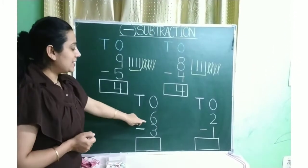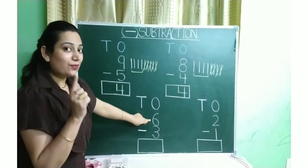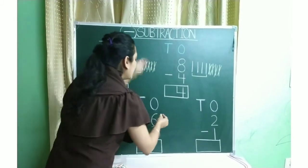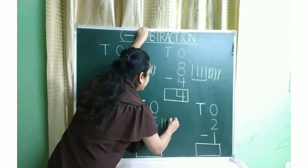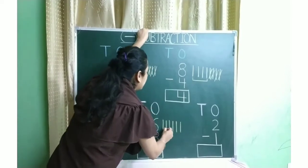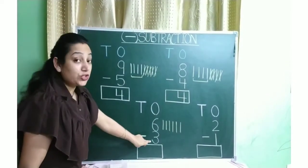Now we will see another one. Which number is this? Number 6. So we will make 6 standing lines. 1, 2, 3, 4, 5, 6. And we have to subtract which number?